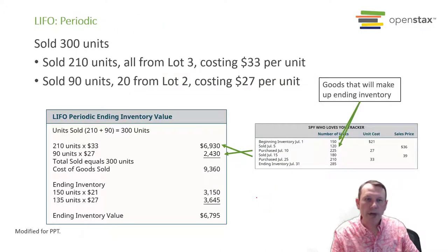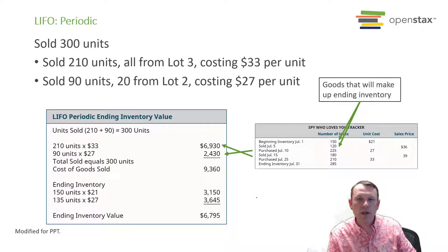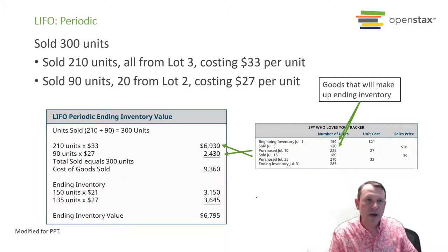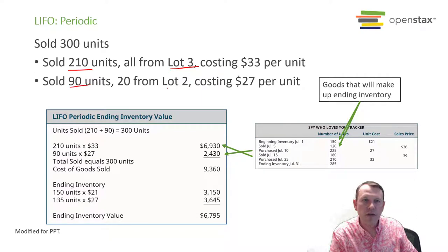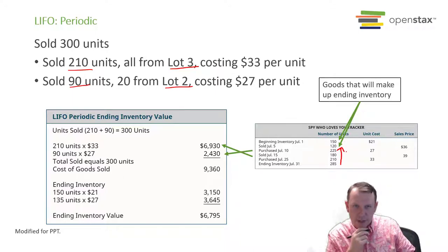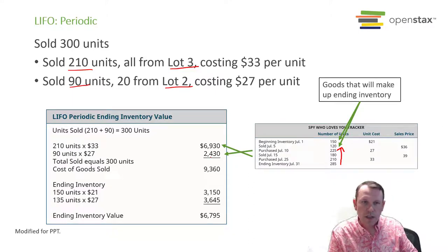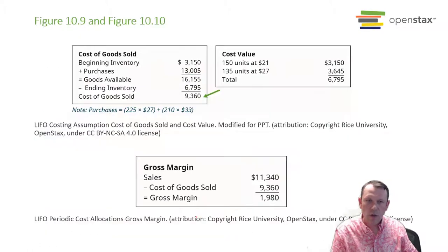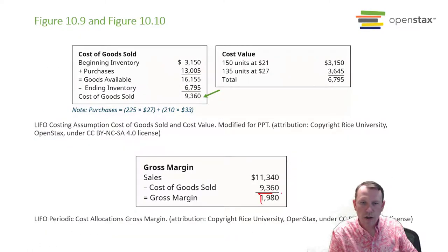For LIFO on the periodic method, we're going to sell the newest units first — last in, first out. We look at lot three and grab all 210 units from there, then 90 from lot two, working our way backward from newest to oldest. This gives us a lot more cost of goods sold, lowers our ending inventory value, and greatly reduces our gross margin.